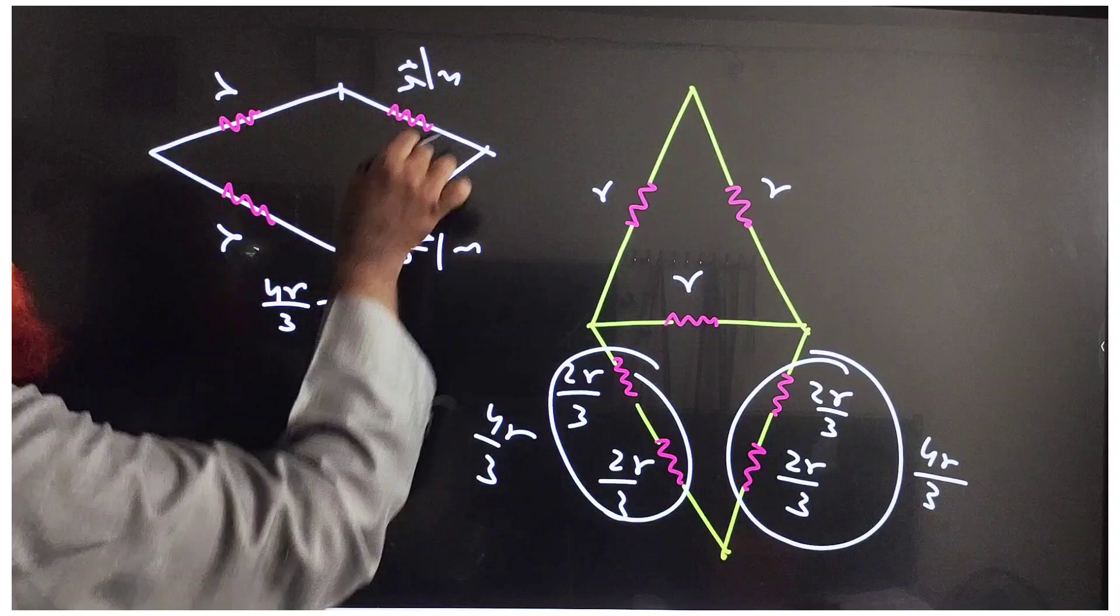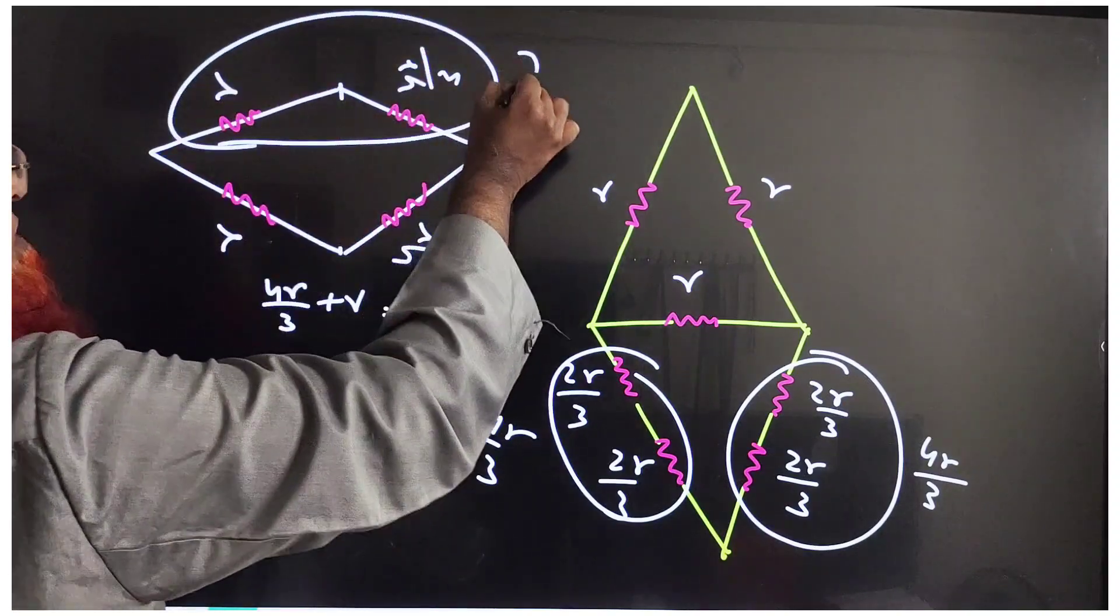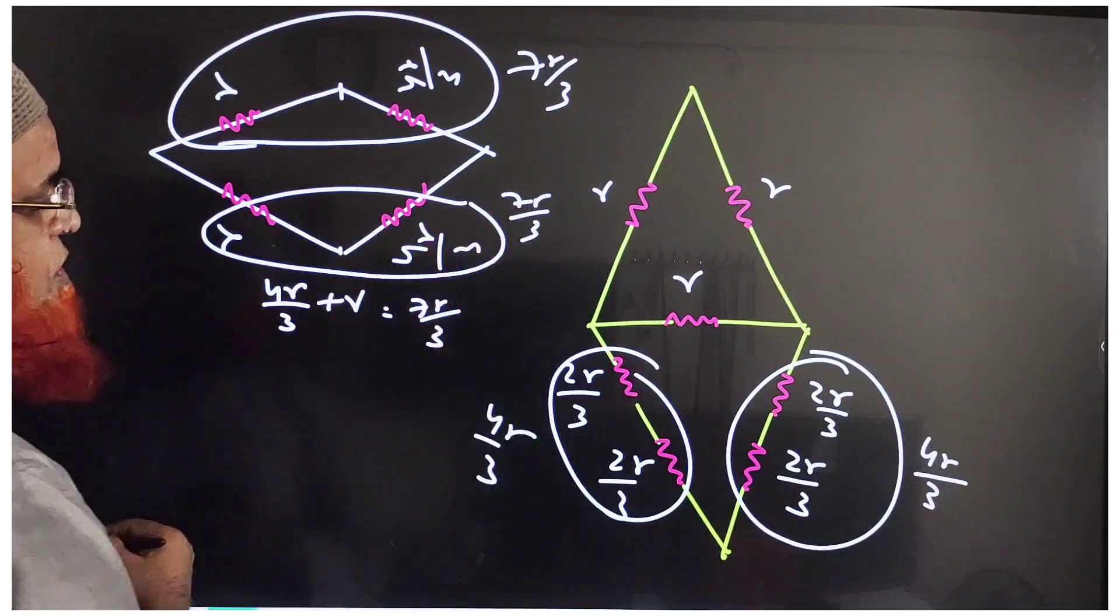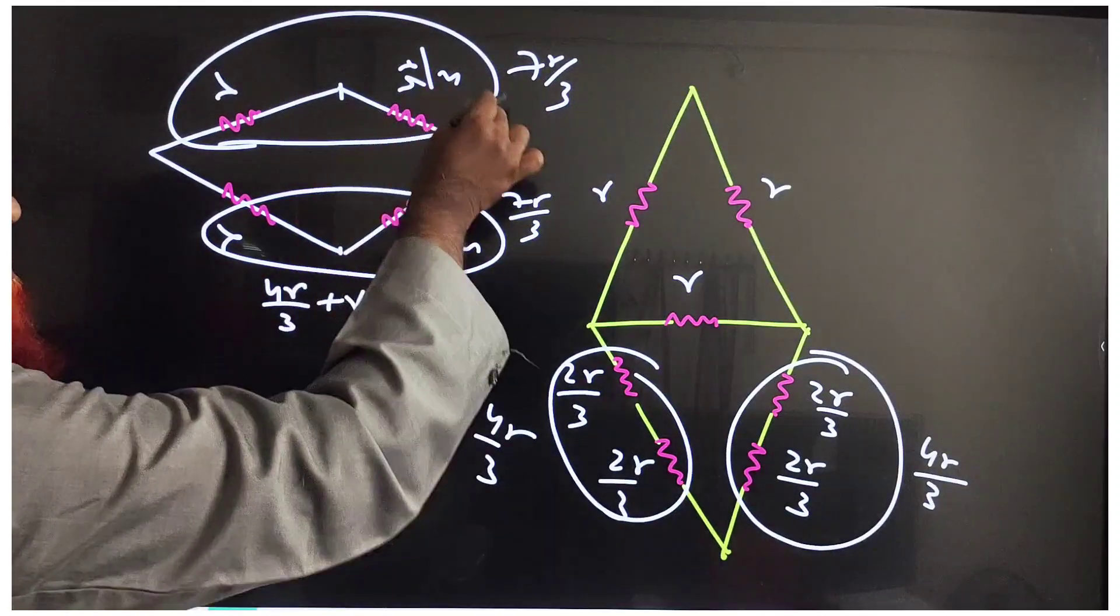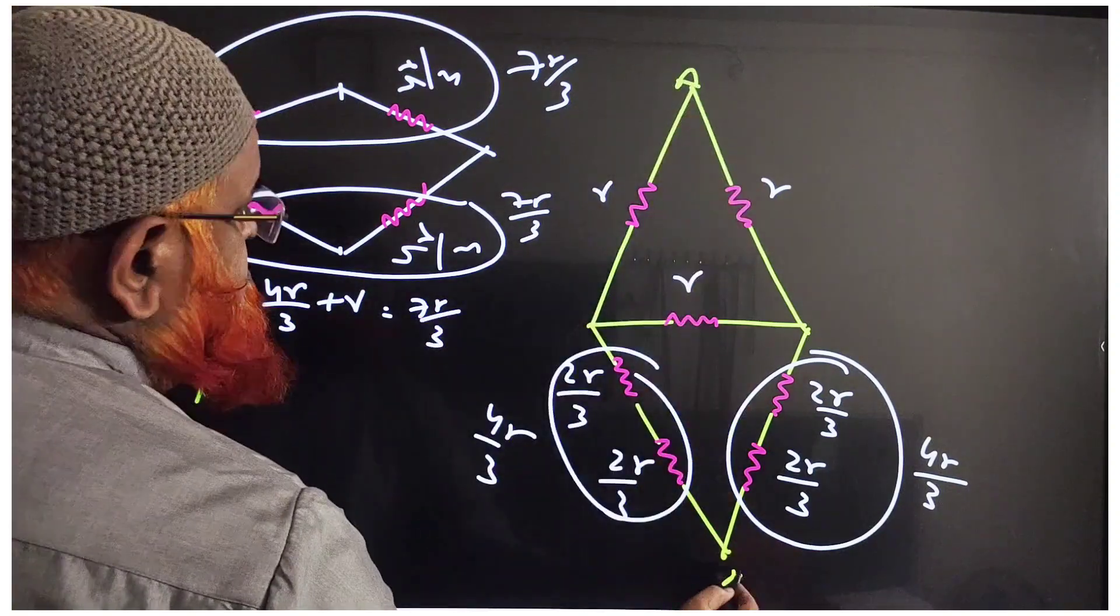This is 7r by 3 and even this is also going to be 7r by 3. Then what happens? 7r by 3 and 7r by 3 are parallel. Therefore, this is A and this part is B. So here in this case, this is A and this is B.